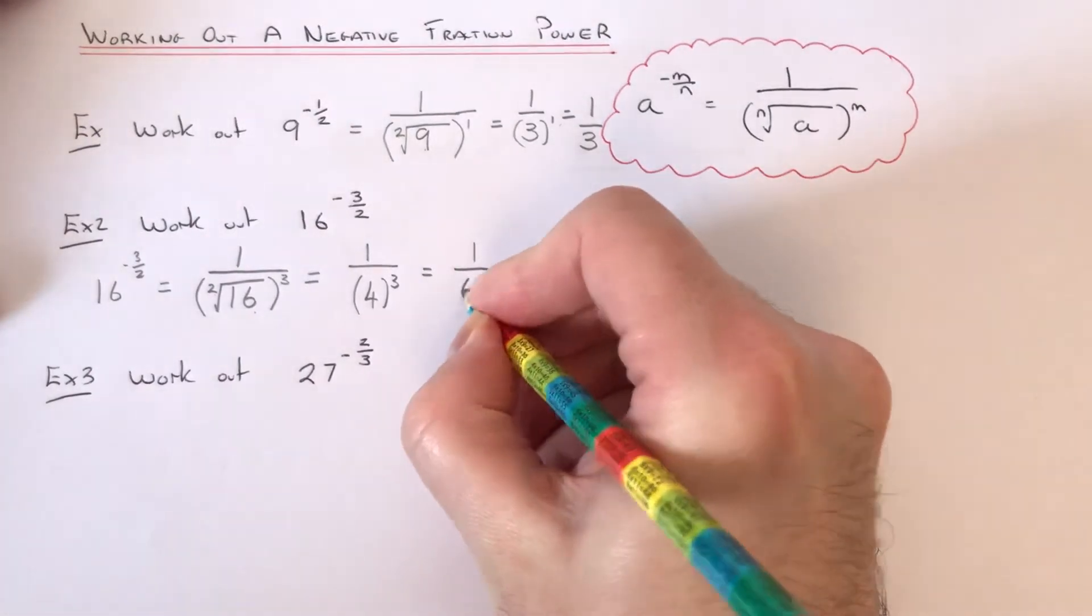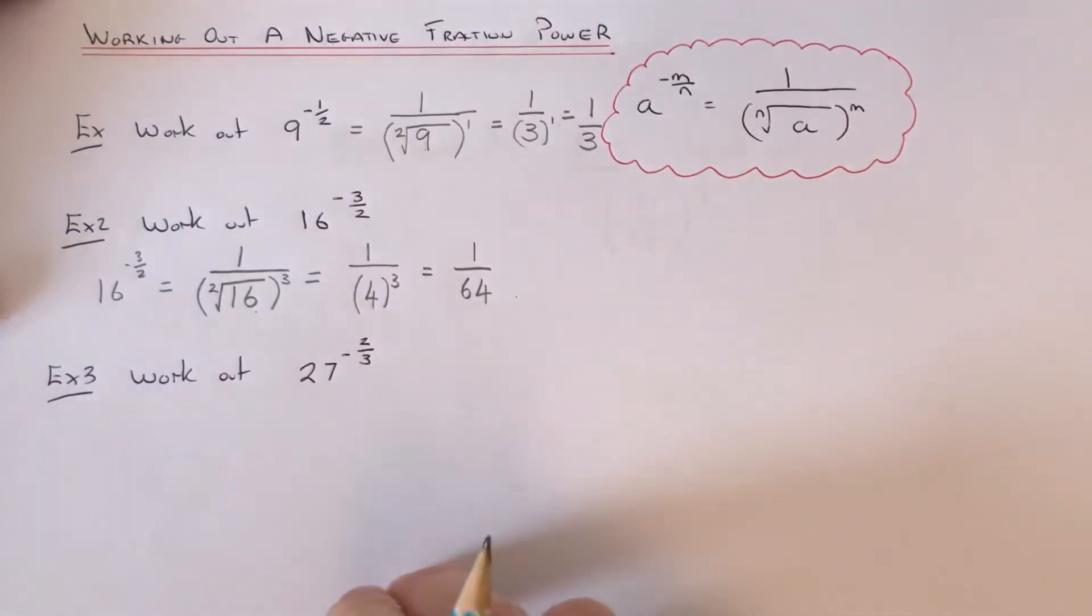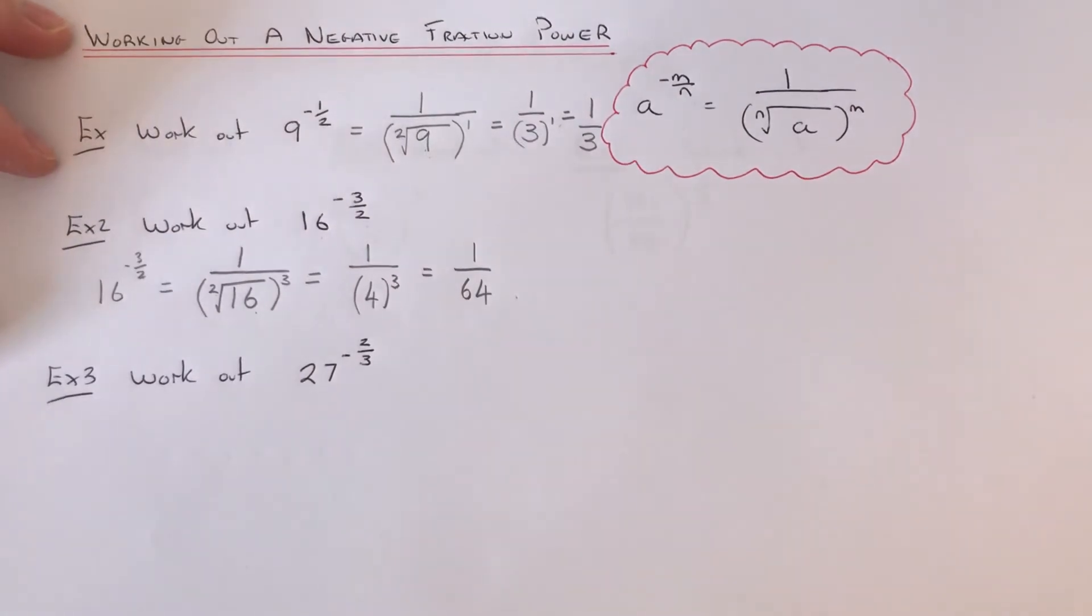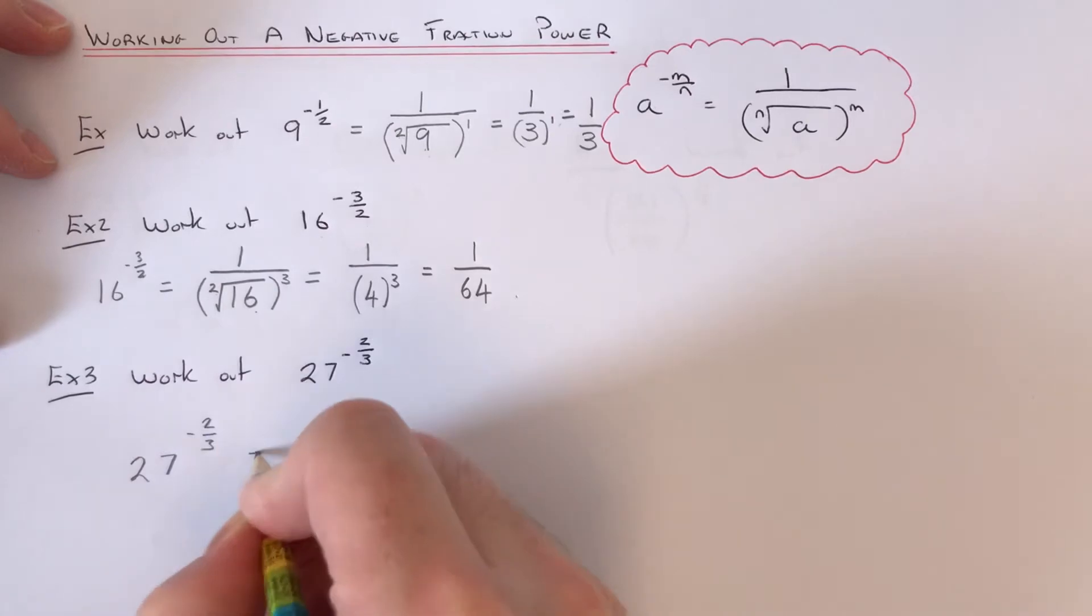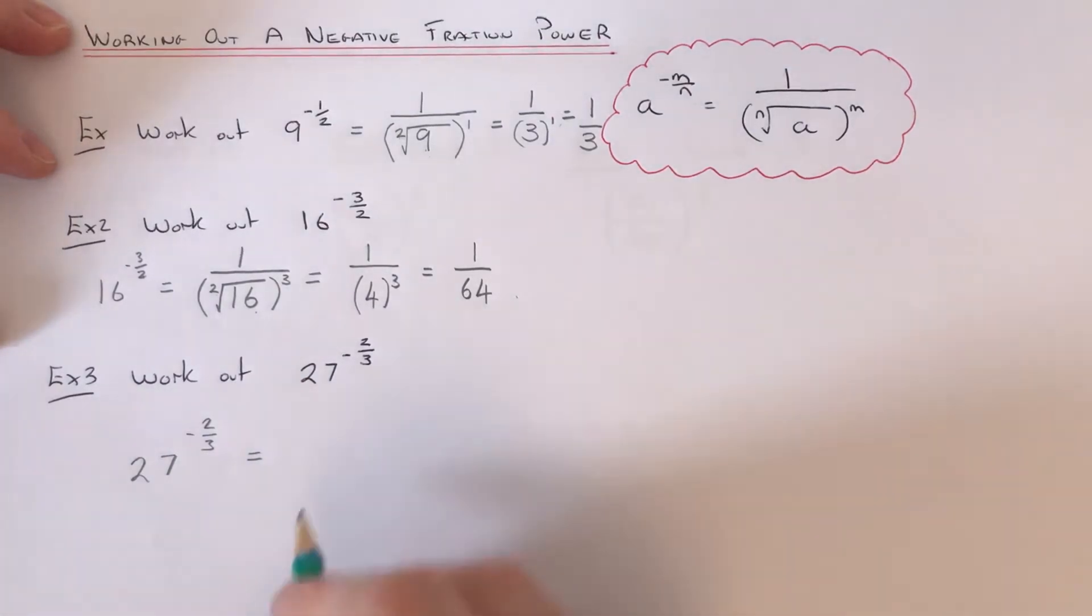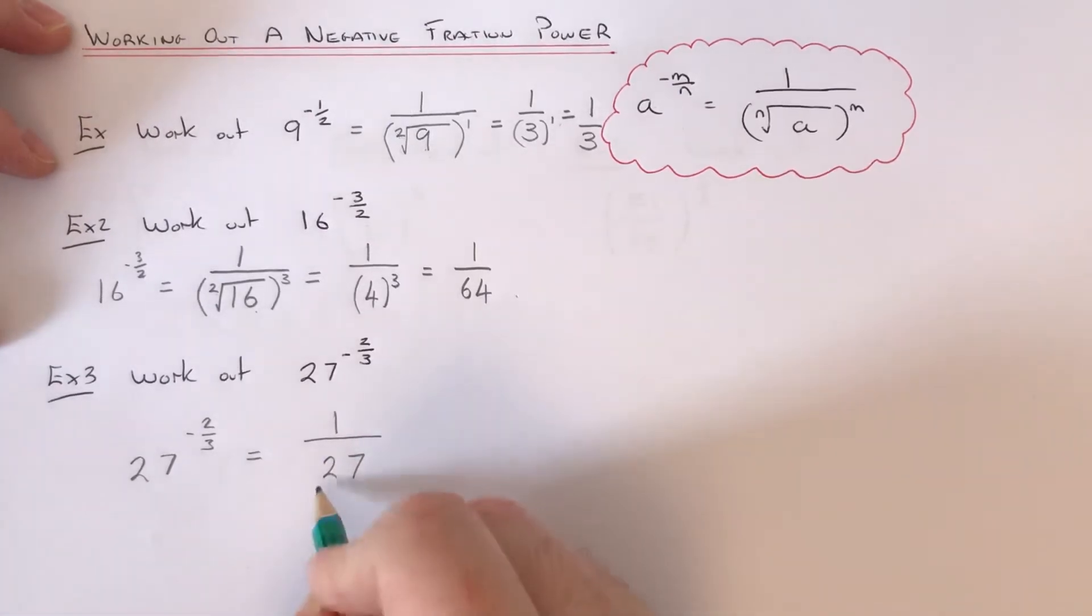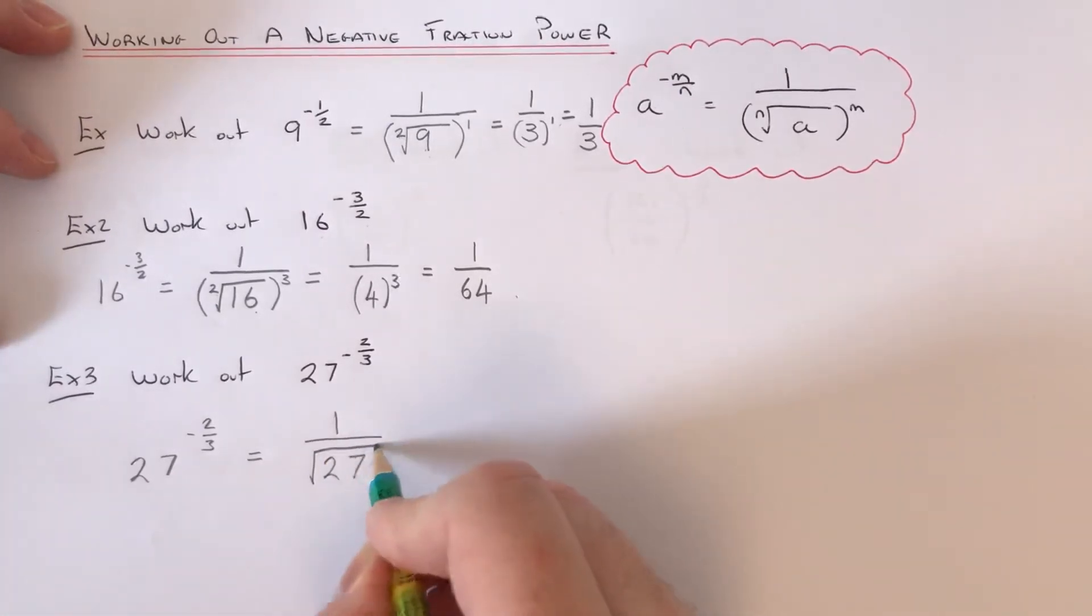Let's have a look at our final example. This time we've got to work out 27 to the power of minus 2 thirds. So again, put the 1 on the numerator of our fraction, and then on the denominator put our base number, which is 27. Then put a root over it. The denominator 3 goes on the root, and the numerator of our fraction 2 goes on the outside.